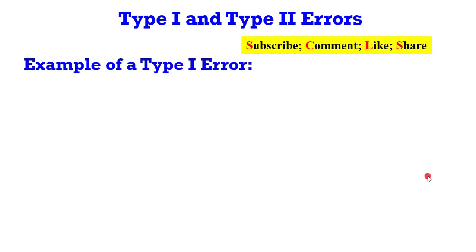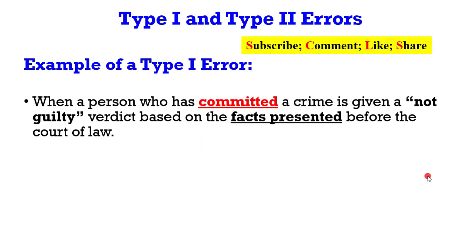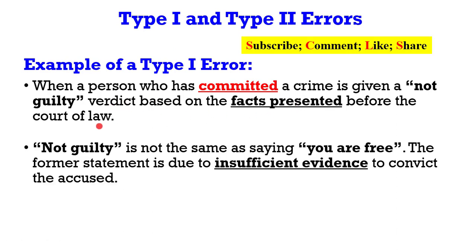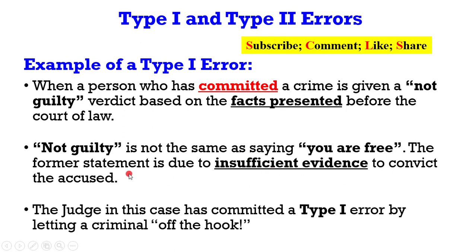Now let's take an example of a type 1 error, borrowing a leaf from the crime literature. When a person who has committed a crime is given a not guilty verdict based on the facts presented before the court of law. Remember, not guilty is not the same as saying you are free. The formal statement is simply due to insufficient evidence to convict the accused. The judge in this case has committed a type 1 error by letting a criminal off the hook.